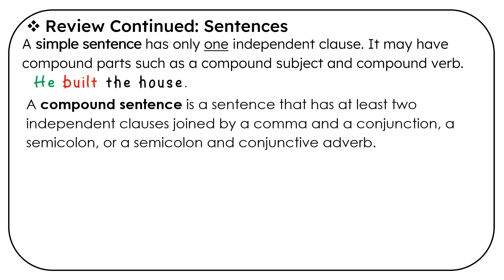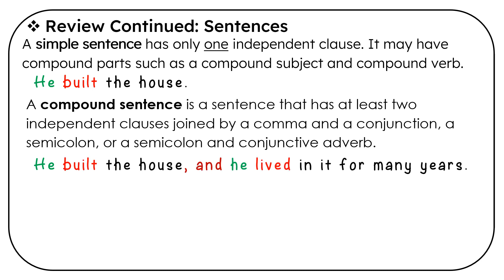A compound sentence is a sentence that has at least two independent clauses joined by a comma and a conjunction, a semicolon, or a semicolon and a conjunctive adverb. He built the house and he lived in it for many years — here we have two independent clauses joined with a comma and a coordinating conjunction.